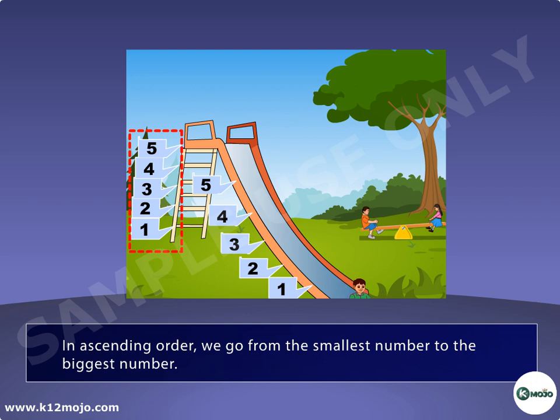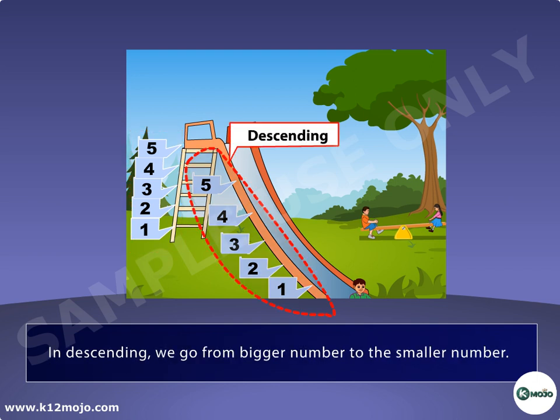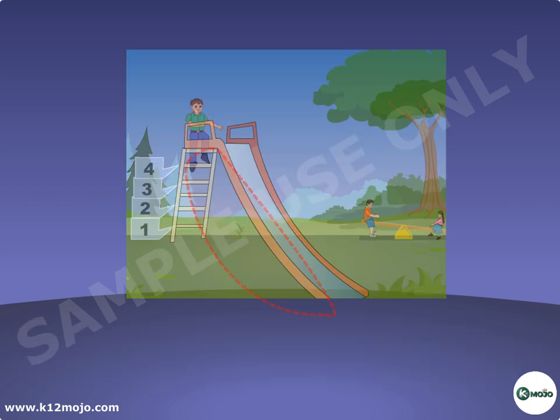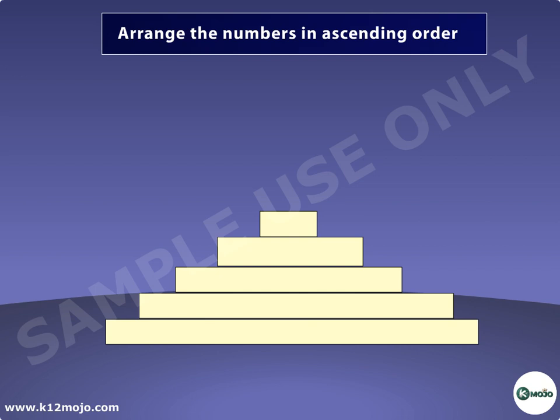In ascending order we go from the smallest number to the biggest number, while in descending order we go from the biggest number to the smallest number.